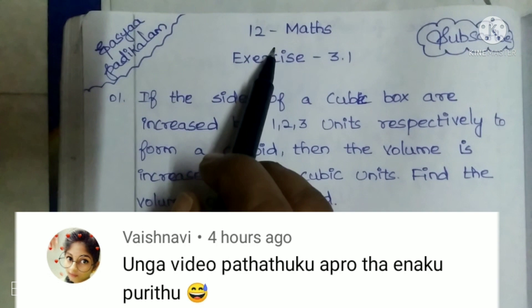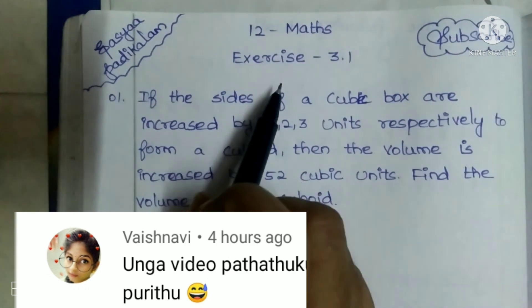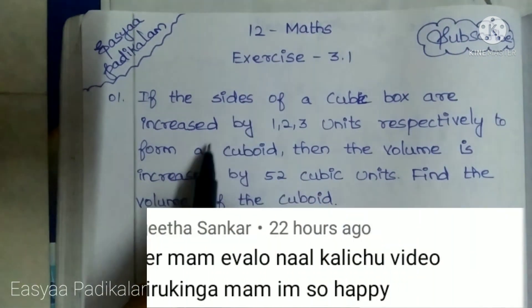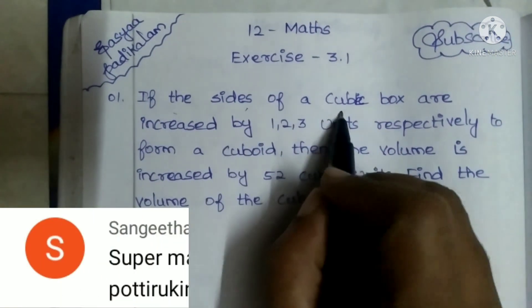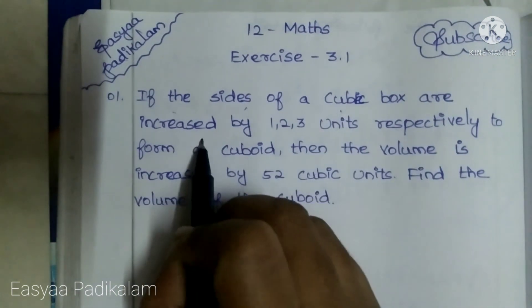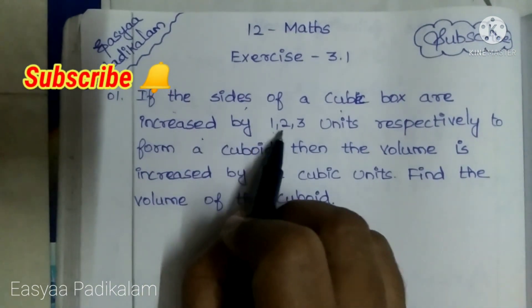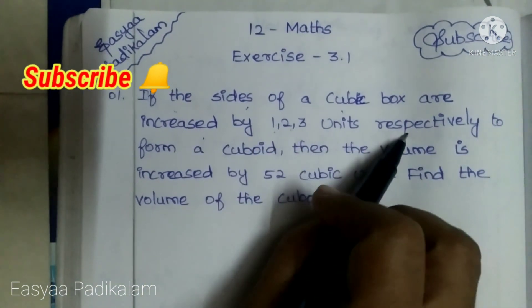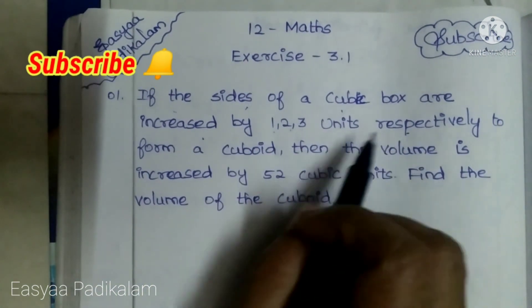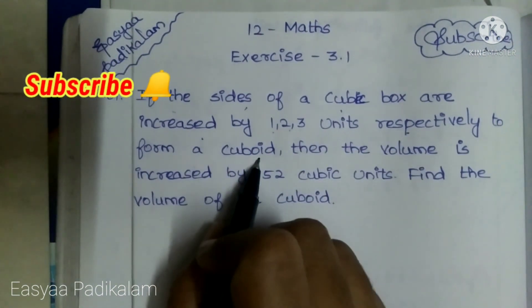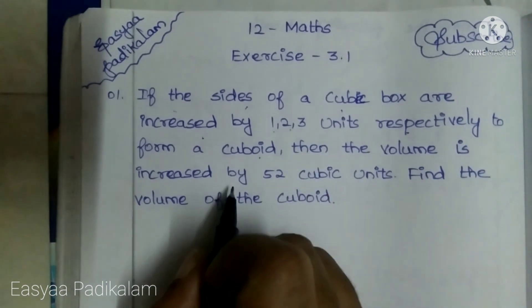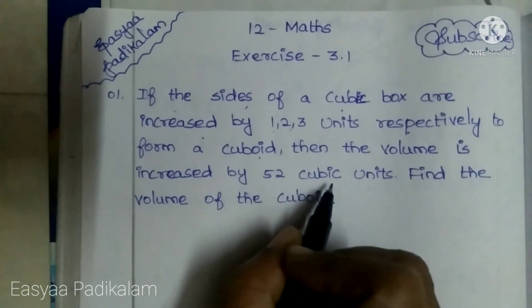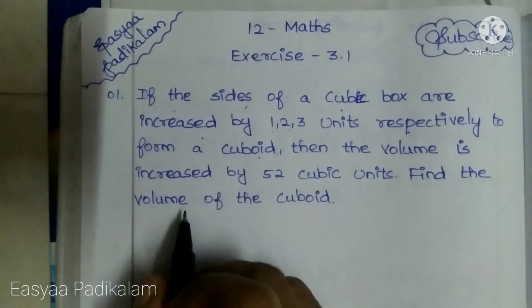Now, number 12. The max marks is 3.1. First sum: if the sides of a cubic box are increased by 1, 2, 3 units respectively to form a cuboid, then the volume is increased by 52 cubic units.